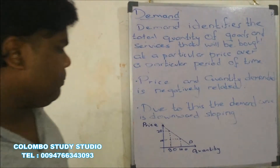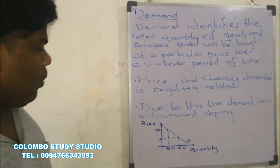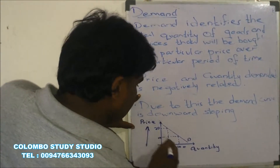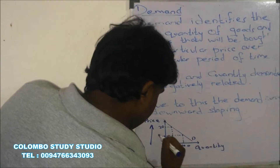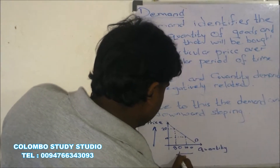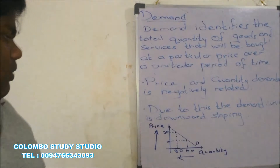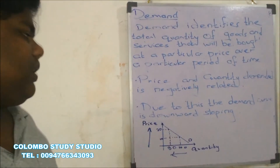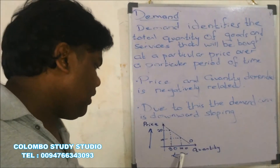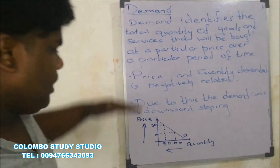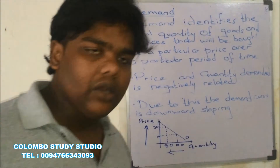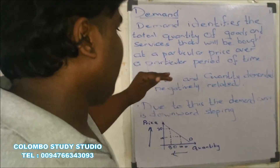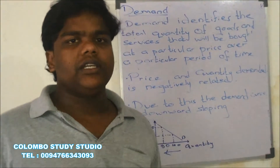In this example, when price increases from 10 to 20, quantity demanded reduces from 100 to 80. So the demand curve is downward sloping because there is a negative relationship between price and quantity demanded. Thank you very much guys.